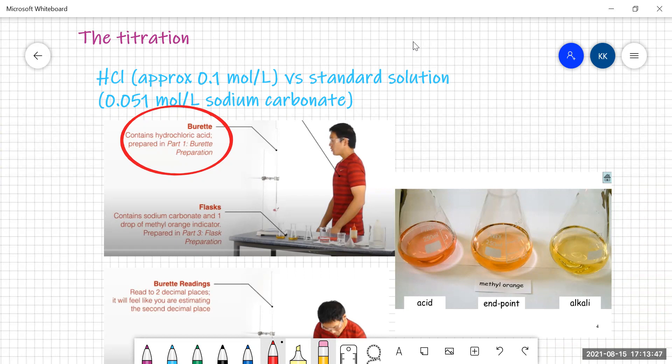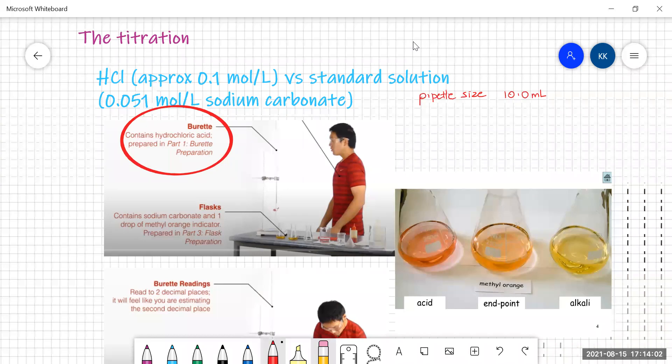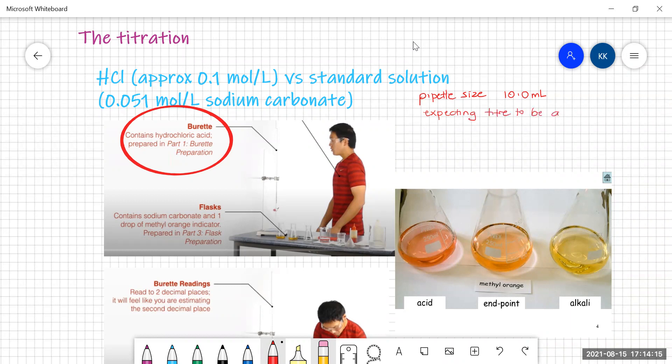You will have some flasks in which you are going to pipette your standard solution. The pipette size that I'm using is 10.0 mil. You may be using a different size. I use 10 mils and therefore I'm expecting my titers to be around 10 mils.